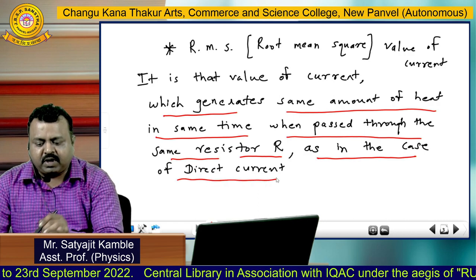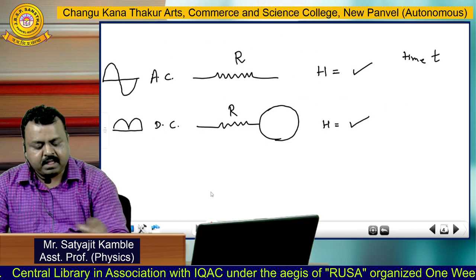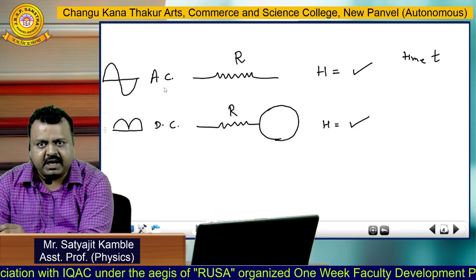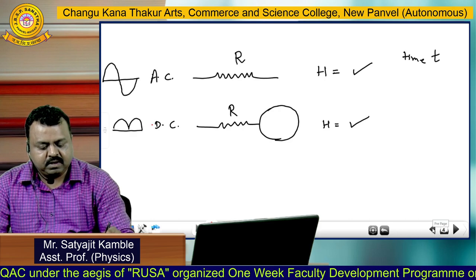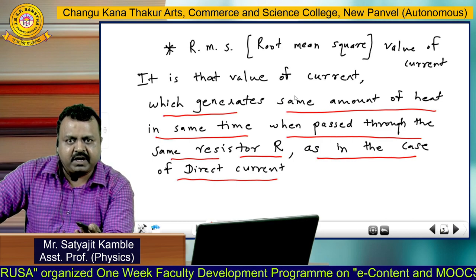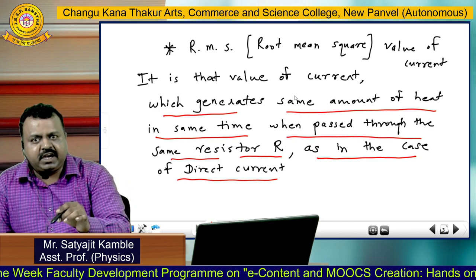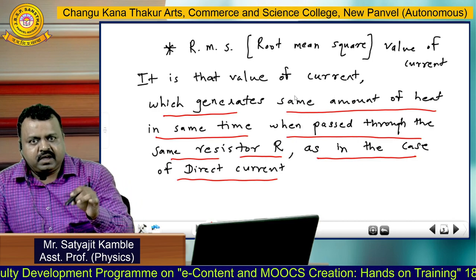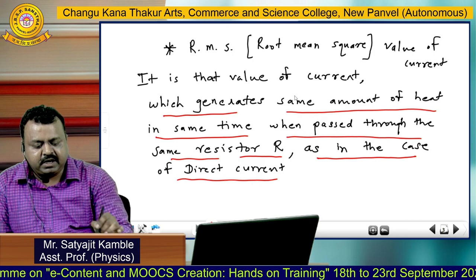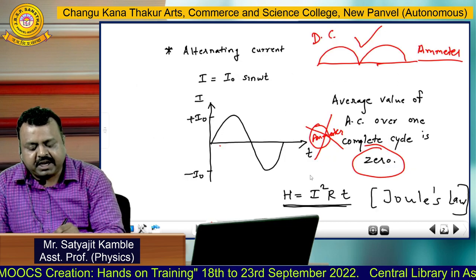To understand RMS value in detail, here is a diagram. In this diagram there is a resistance R, and we are going to pass alternating current and direct current through it. For the measurement of alternating current, we have to use a property which does not depend upon the direction of current, because for alternating current the direction is continuously changing — and therefore using an ammeter we cannot measure alternating current. So for measurement of alternating current, we have to use a property which doesn't depend upon direction of current, and that property is the heating effect.